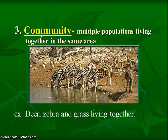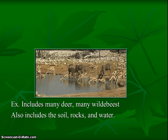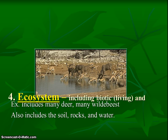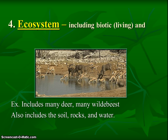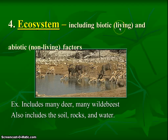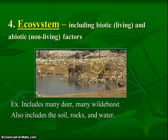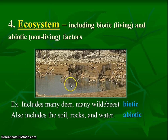Now we're going to zoom out even past this. You might ask, now we have lots of types of creatures — what would we possibly add when we zoom out even further? Now we're going to have many deer, many wildebeest, and we also have soil, rocks, and water. That gives us the fourth level, even bigger than everything else: the ecosystem. The ecosystem definition has two parts. Ecosystems include biotic — that's a vocab word meaning living — but they also have abiotic factors. So now we're including not only the biotic things, but also the abiotic things like water, rocks, and soil.